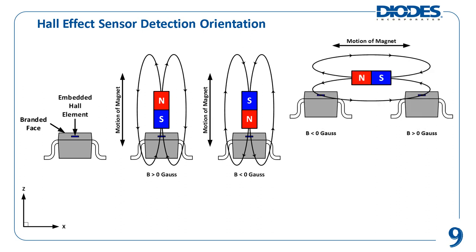The magnet can also move sideways along the x-axis direction and slide back and forth over the branded face of the Hall Effect sensor — this is called a slide-by configuration. In this configuration, the Hall Effect sensor is still detecting the z-axis component of the magnetic field. A north pole's magnetic flux density is still negative and a south pole's magnetic flux density is still positive. When the north and south poles are equidistant from the sensor as the magnet slides by, the detected magnetic flux density in the z-axis direction is zero.